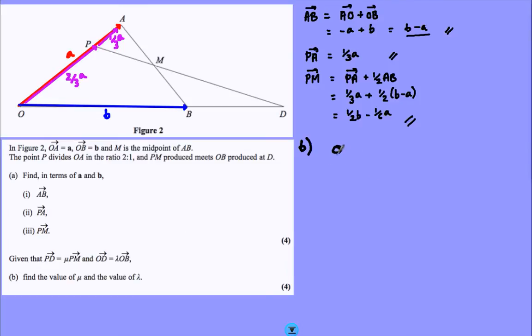So I'm thinking about the easy one first. O to D, it tells me, is a multiple lambda of OB. In other words, lambda times B. Now, alternatively, I reckon O to D. How else could I go there? Well, O to P and P to D, chosen because I've also been given P to D.